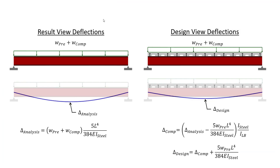The deflection for the dead load case, shown in the result view, was computed using the total dead load and the moment of inertia for the noncomposite beam. To determine the composite deflections, Visual Analysis automatically subtracts out the precomposite deflections and then scales the result by the ratio of the beam's moment of inertia to the lower bound moment of inertia to account for the composite stiffness of the beam and slab system. The total deflections are calculated by adding the precomposite deflections to the composite deflections.